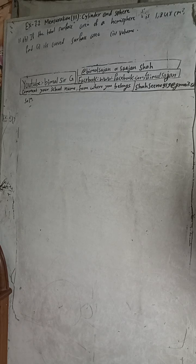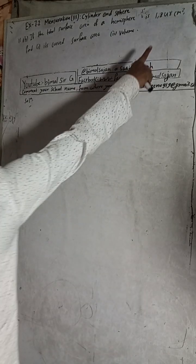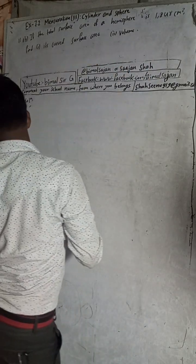It is totally free. Subscribe karna kunai paisa lag dena. Bas tapai le like or comment gar dinu hola. Now the solution. If the total surface area of a hemisphere is 1848, find its curved surface area and volume.